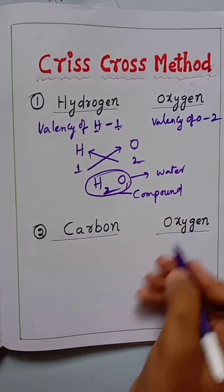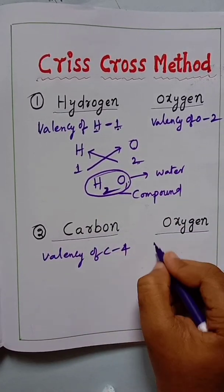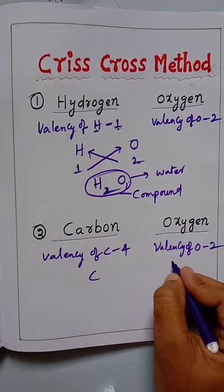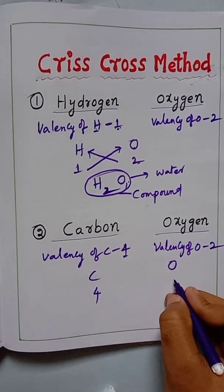You can find carbon and oxygen formula also. Valency of carbon is 4, and the valency of oxygen is 2. Then same: carbon symbol is C, oxygen symbol is O. You have to write the valency of carbon is 4, valency of oxygen is 2.